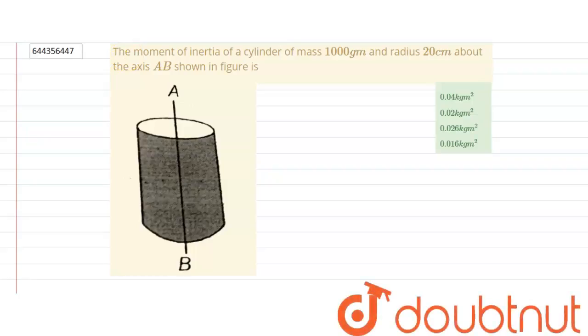Hello. The question asks for the moment of inertia of a cylinder with mass 1000 g and radius 20 cm about the axis AB shown in the figure. Four options are given, and we need to check which is correct. The question doesn't mention whether the cylinder is hollow or solid.